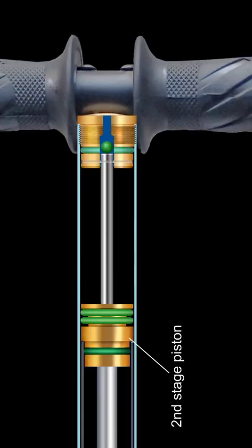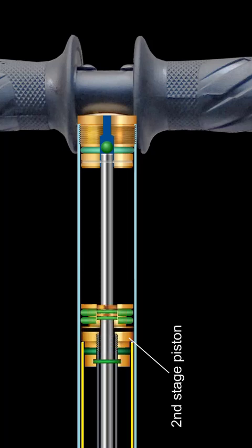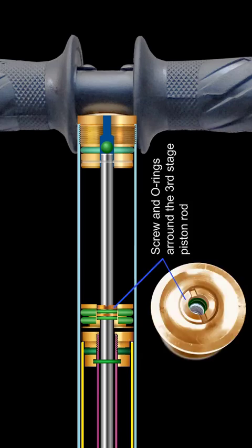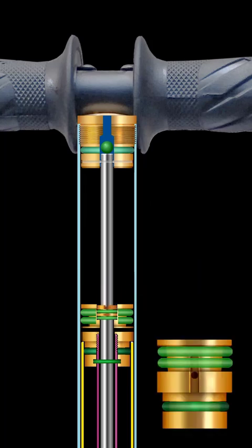Air goes into the third tube through the second stage piston. The third piston rod also moves through it. There are two o-rings around the piston rod. These o-rings are tightened with the help of a screw. There are two cuts below the o-rings of this piston.